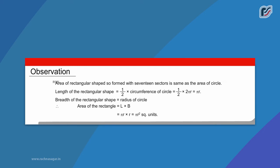Observation: Area of rectangular shape so formed with 17 sectors is same as the area of circle. Length of the rectangle equals 1/2 into 2 pi r equals pi r. Breadth of the rectangular shape equals radius of circle. Therefore, area of the rectangle equals l into b equals pi r into r equals pi r square units.